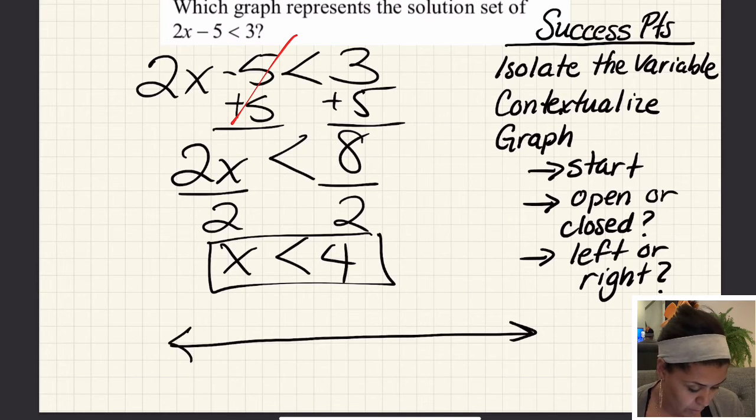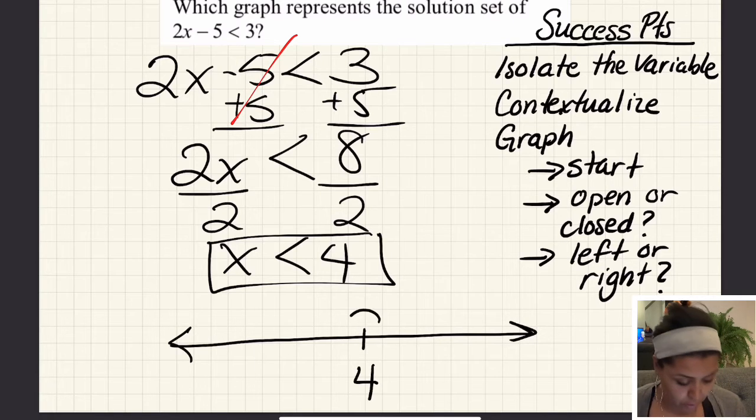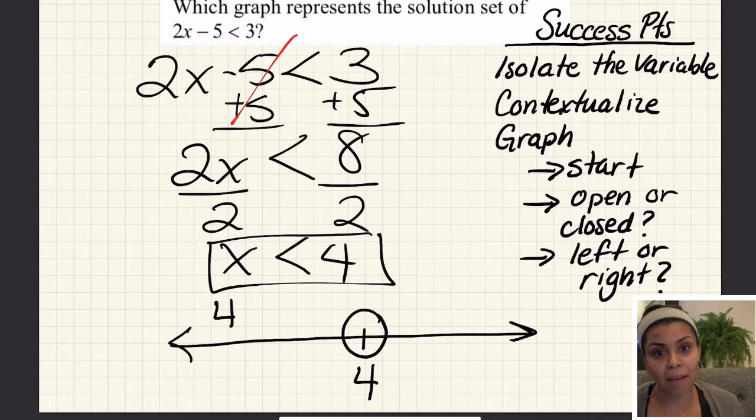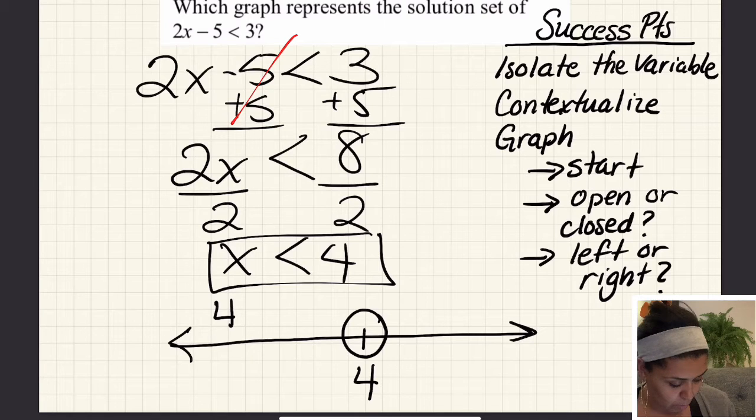I'm going to draw a number line to represent all numbers less than 4. I'll start by writing the number 4 and drawing a little circle right over the 4. I'm thinking to myself, can 4 be part of my solution? No, because it has to be less than 4. Where do I see numbers that are less than 4? On the left side, so I'm going to show x on the left side.